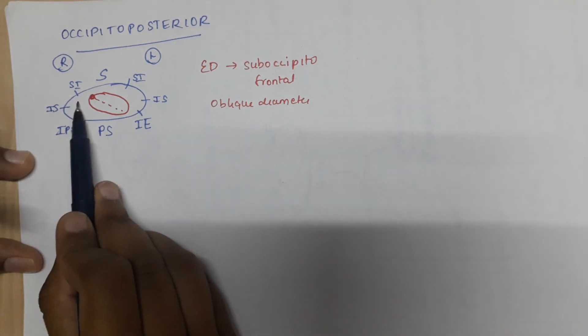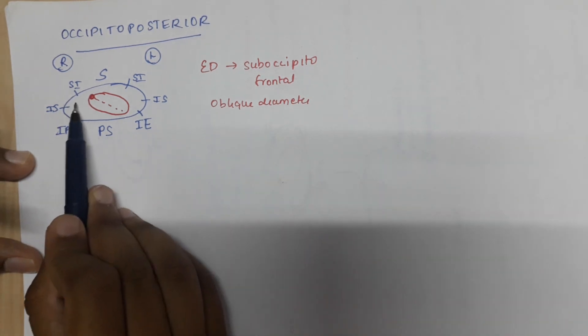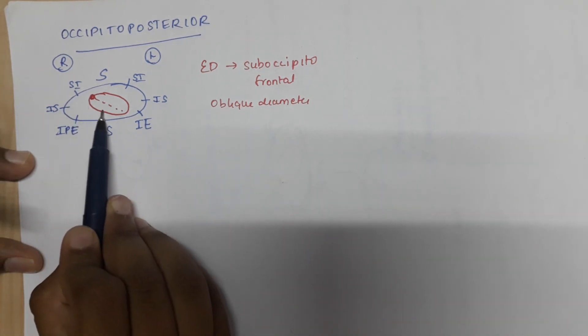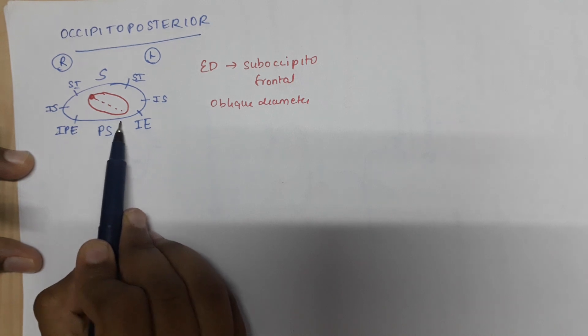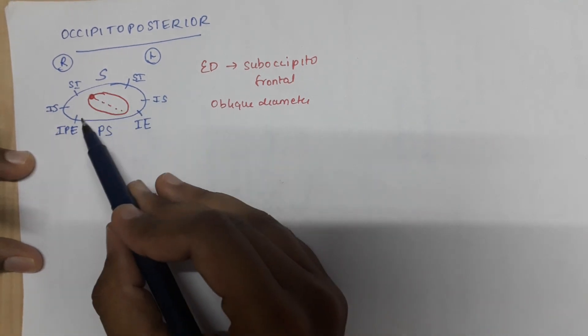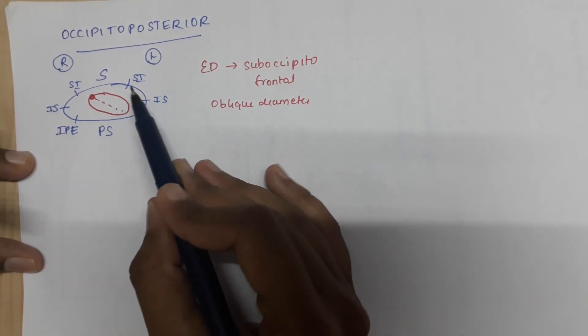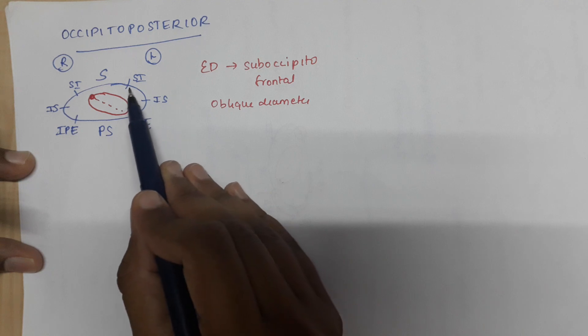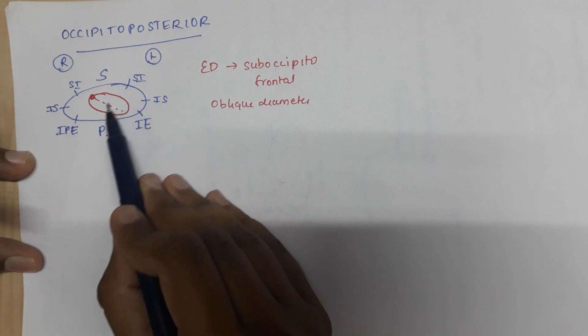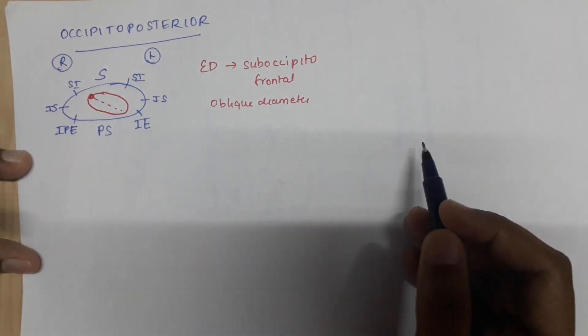If it is the right occipitoposterior position, then the engaging diameter will be the right oblique diameter. And if it is the left occipitoposterior position, then the engaging diameter will be the left oblique diameter.